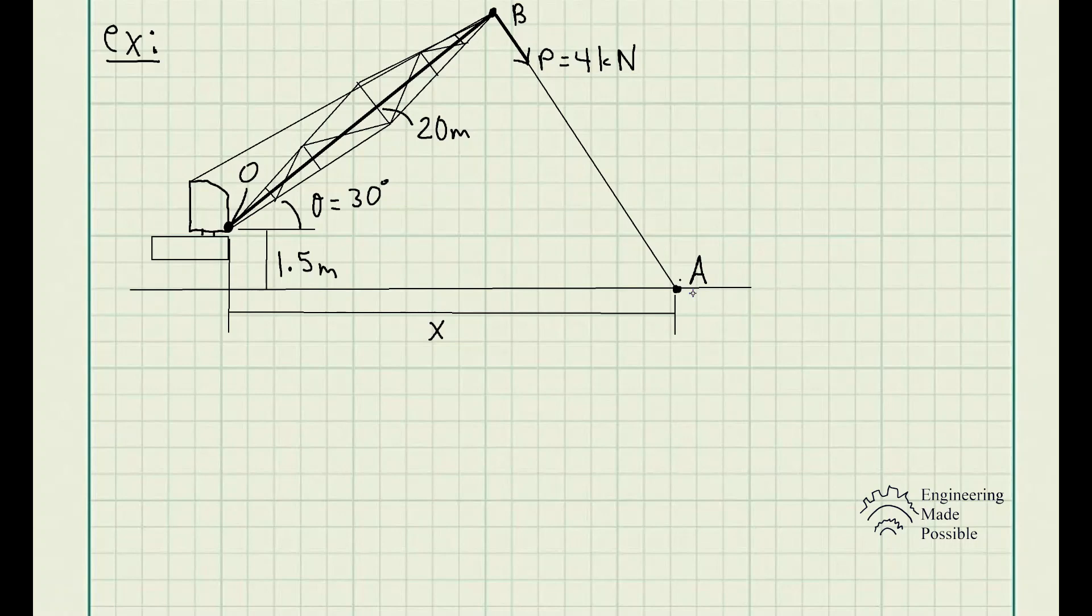First we have to determine at what X will this P force of 4 kN have the maximum moment at point O. The main concept of the moment is that the moment about point O equals a force times the distance that's perpendicular to this force.